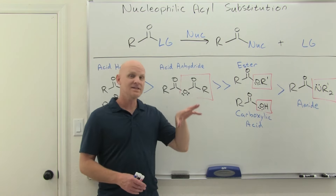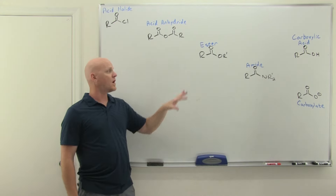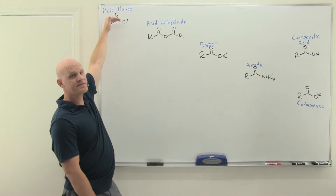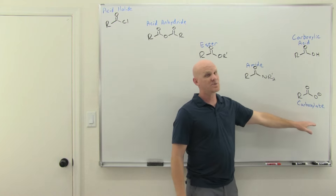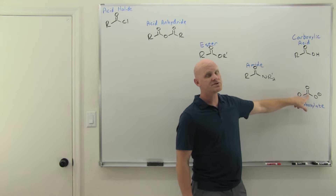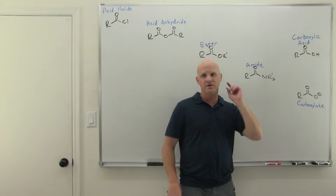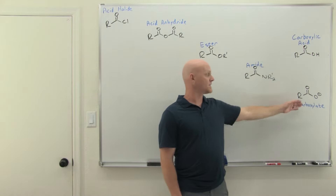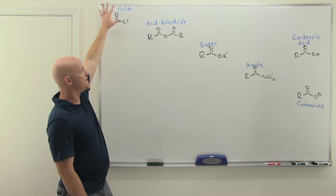All the carboxylic acids and derivatives can be placed on a chart ordered by reactivity — most reactive at the top, least reactive at the bottom: acid halides, then anhydrides, then esters and carboxylic acids roughly equal, then amides, and finally carboxylate at the very bottom. The carboxylate, with its negative charge making it even more electron-donating, is essentially the bottom of the food chain in reactivity and can't really be converted into the others, with one exception.